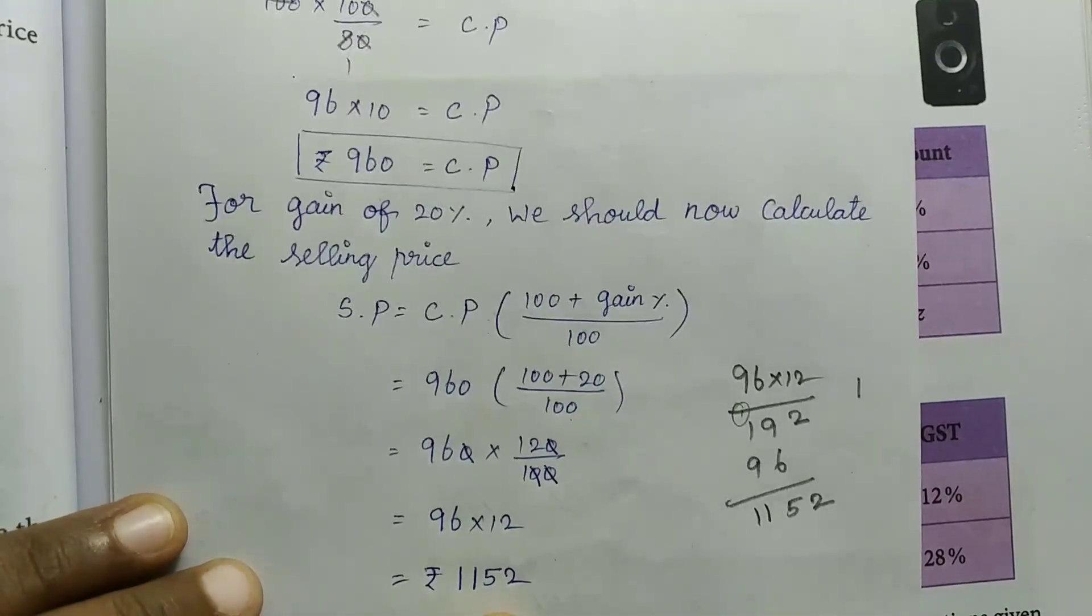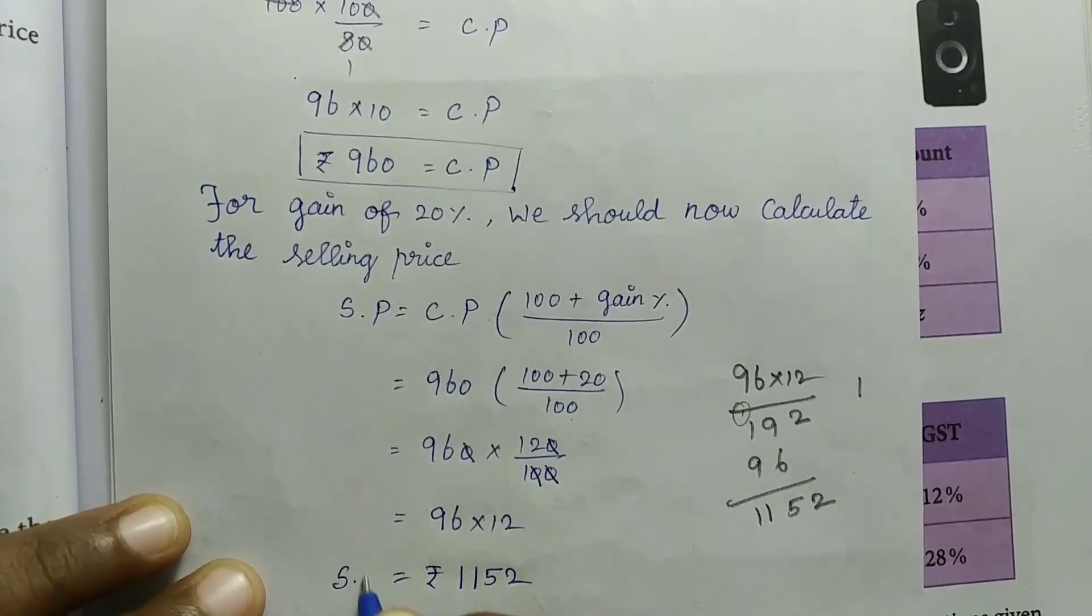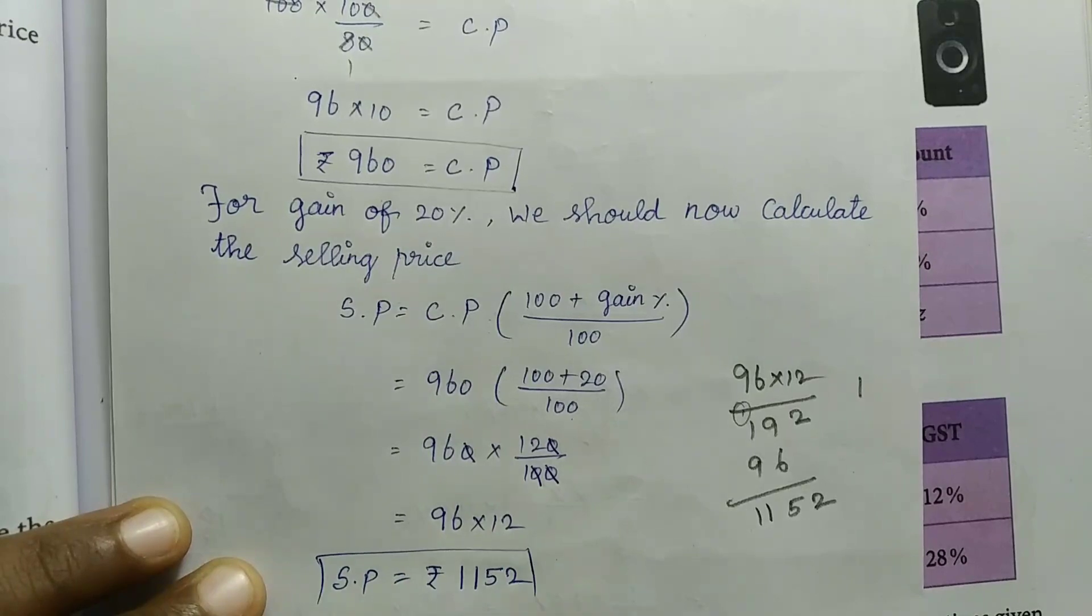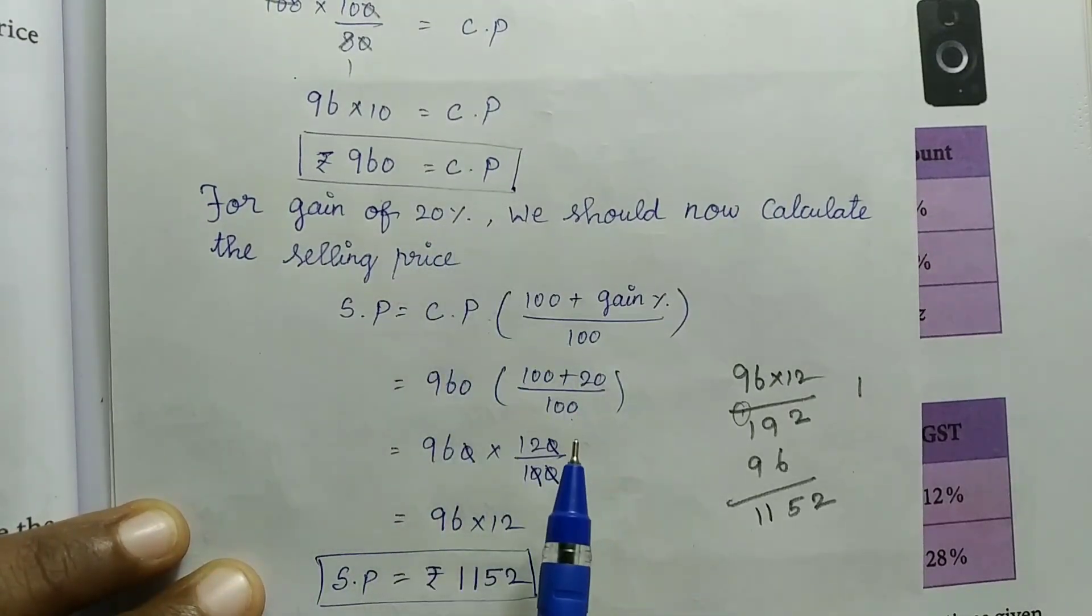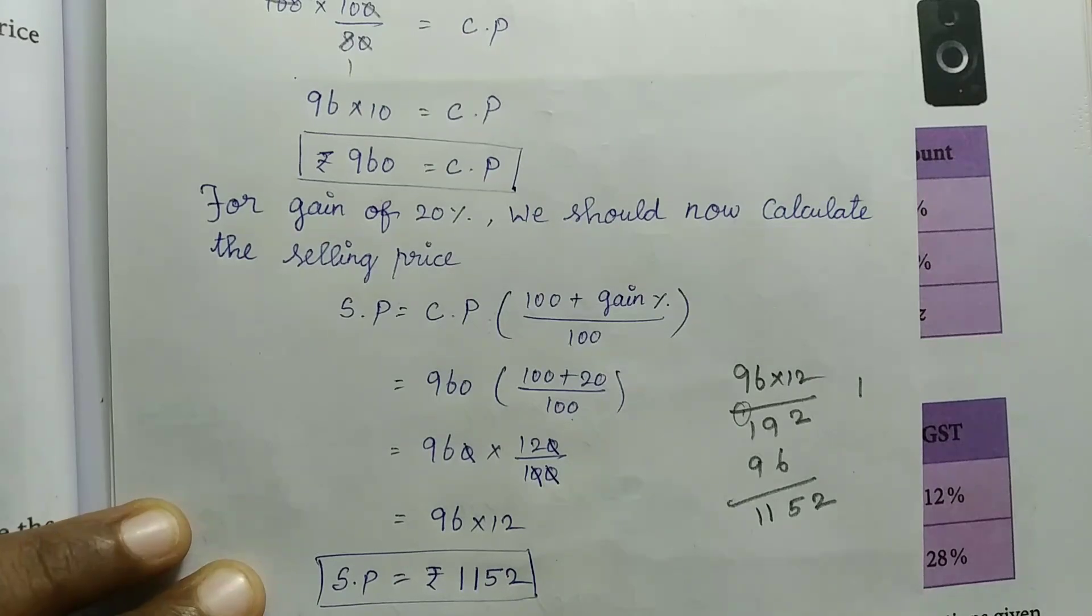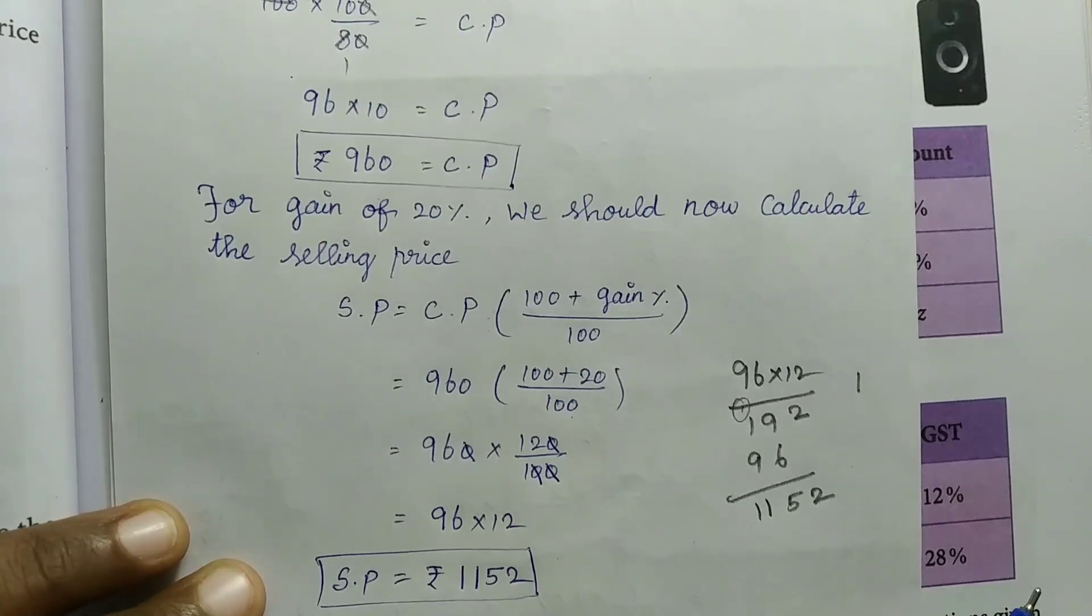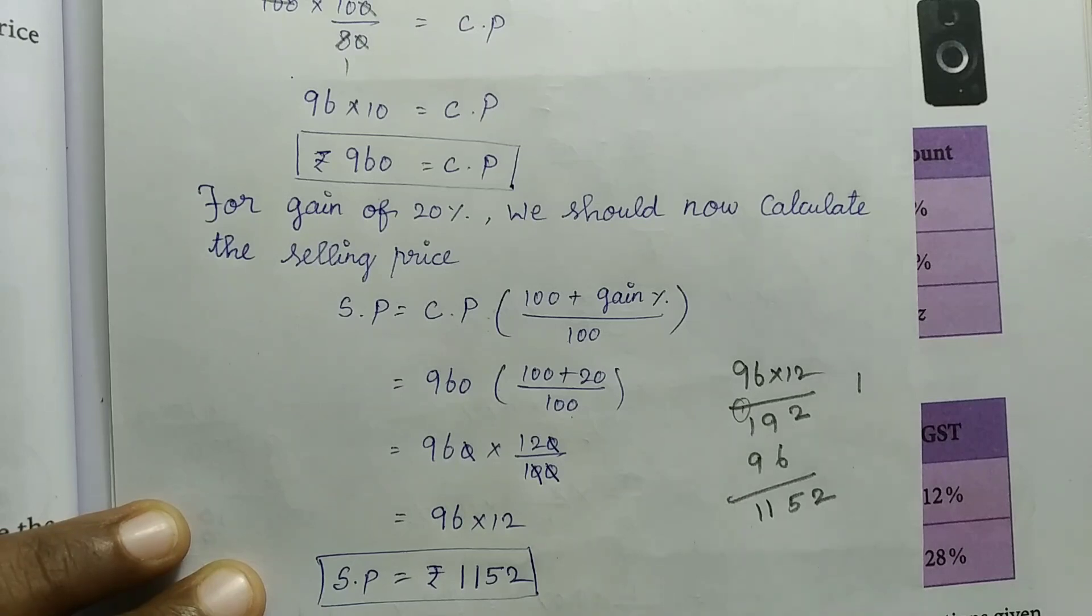So the selling price at 20% gain is Rs. 1,152. This is the explanation. Please like and comment. Please subscribe. Thank you for watching.